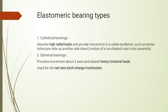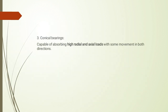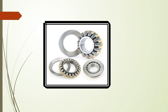Cylindrical bearing high radial loads absorb करते हैं और radial oscillation में movement देते हैं। Conical bearing दो types के loads carry कर सकता है — combination में use करके आपको better और required movement देगा और जितना load इसको carry करना है उतना load for the complete rotor system carry कर सकता है। तो हमने तीन types की bearings देख लिए।